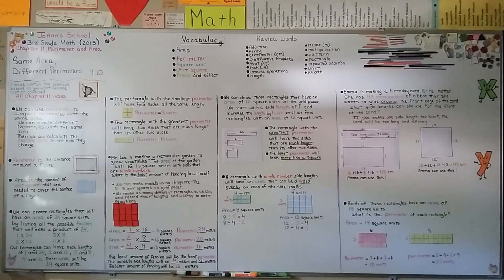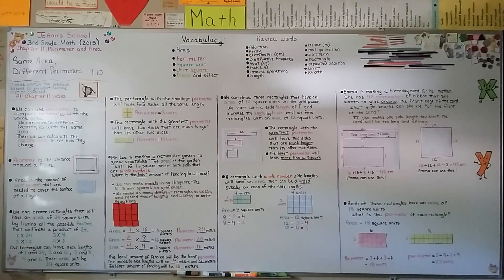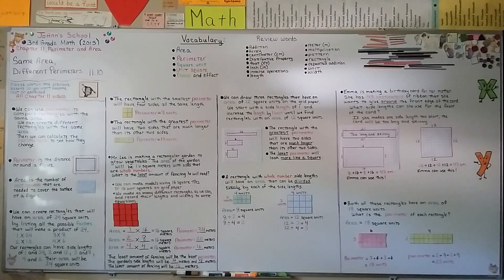When finding rectangles with the same area, start with 1 unit on a side, then try 2, 3, 4, and so on. You can also list all factor pairs for the given area to find your side lengths. We're going to talk about geometry in chapter 12 — plane figures, angles, points, and lines. Hope to see you there, bye!